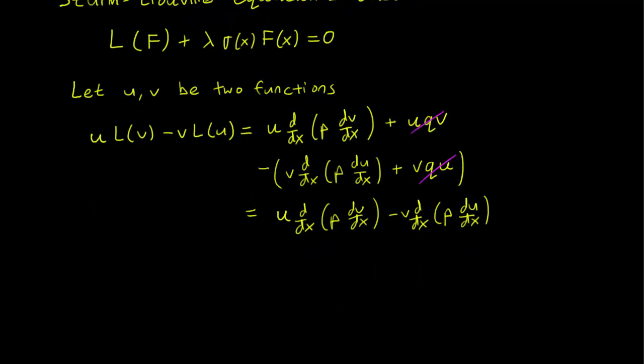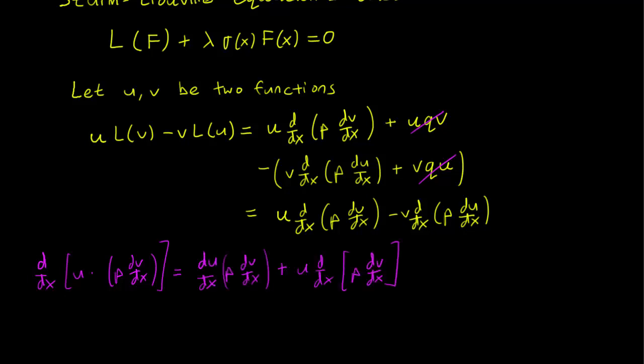We can make this expression nicer by using the product rule. If we differentiate u times p dv/dx, leaving p and dv/dx together even though p is a function of x, we obtain this expression. We differentiate the u term first and leave the p dv/dx term alone, then leave u alone and differentiate the p dv/dx term. So we have an expression involving u d/dx(p dv/dx).